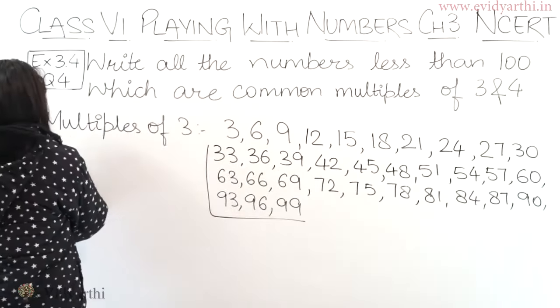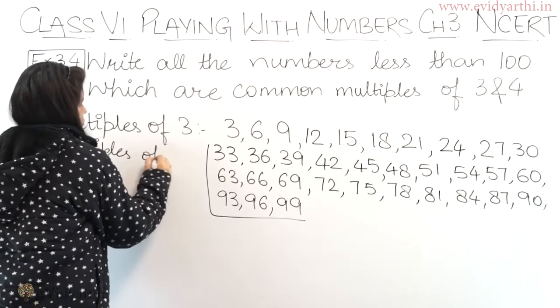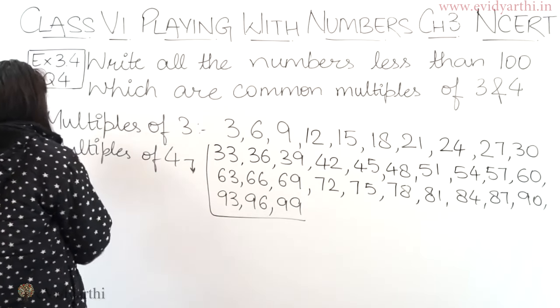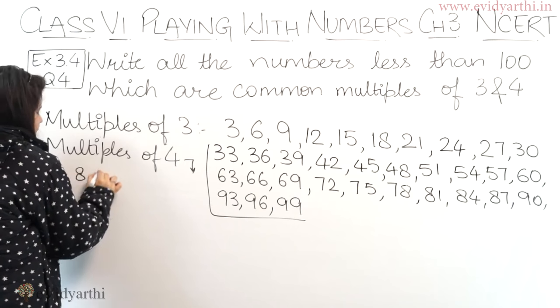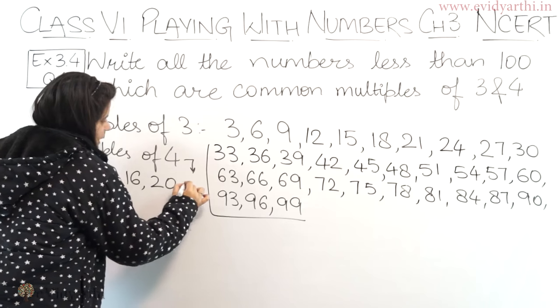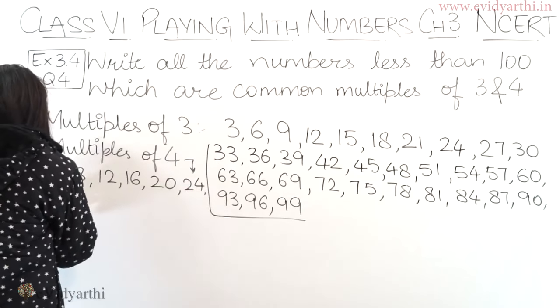Now let's write the multiples of 4. So multiples of 4 will be 4, 4 twos are 8, 4 threes are 12, 4 fours are 16. Then we have 4 fives are 20, 4 sixes are 24, 4 sevens are 28.